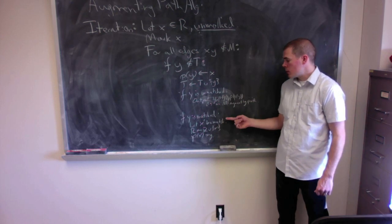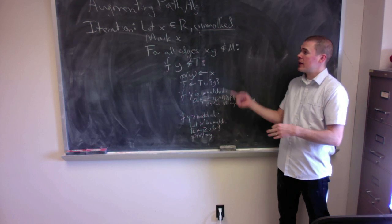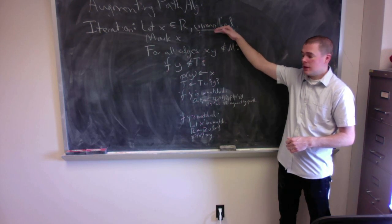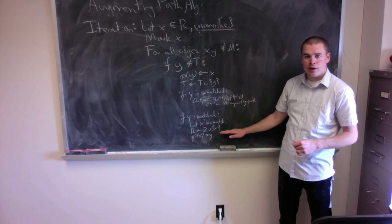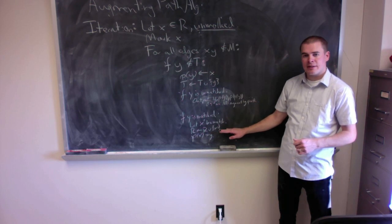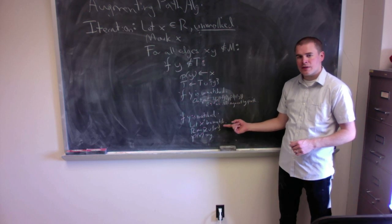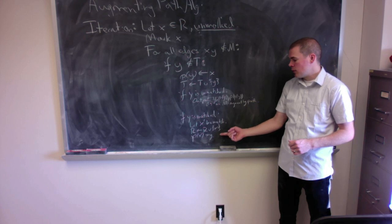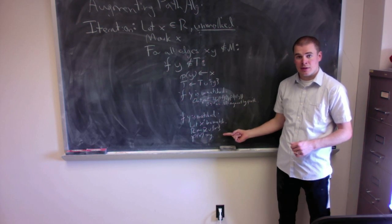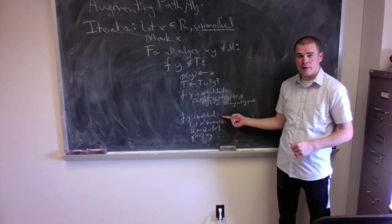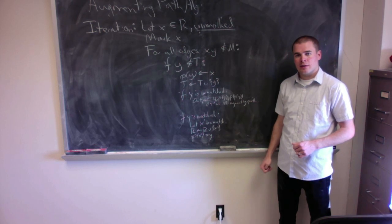If y is matched, I let x' be the vertex that is matched to y. I know that x' is not the current x. I place x' into my set R if it is not there already, and I make the predecessor of x' be y. I know this predecessor has not been set before because the only way to add a new vertex x' into R is through this step, uniquely by this vertex y. I continue this iteration for all edges x,y that are not in my matching.